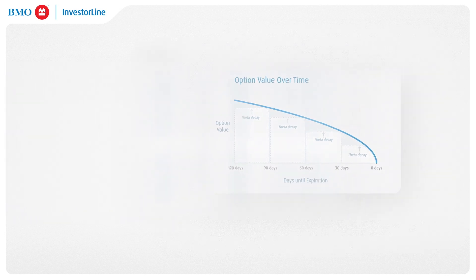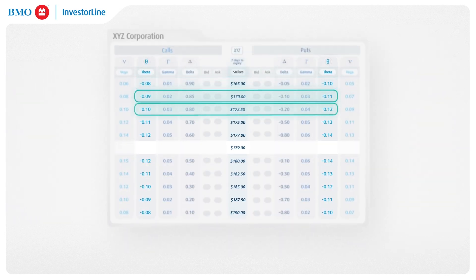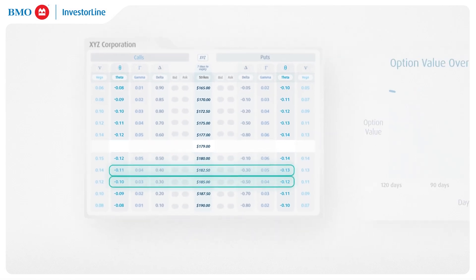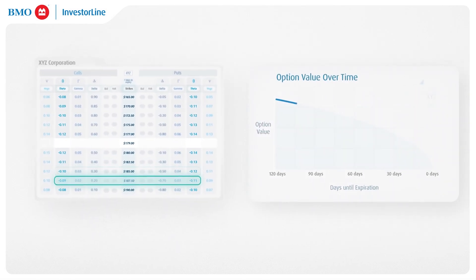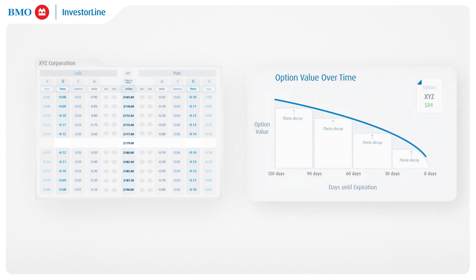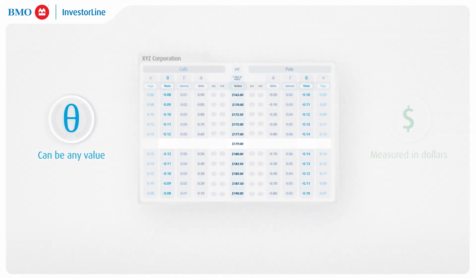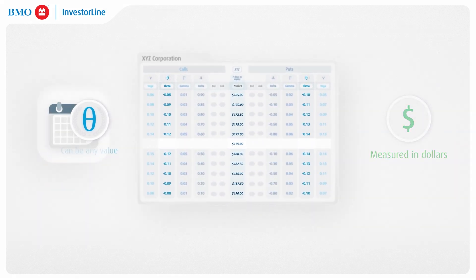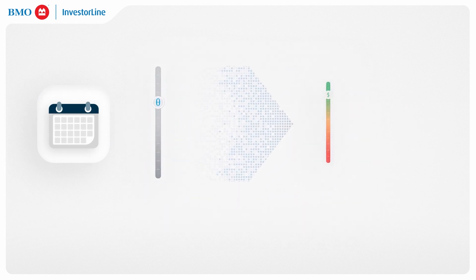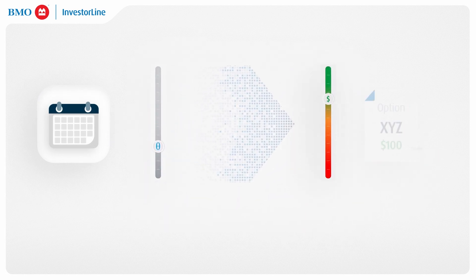Here on the options chain, you'll notice Theta values associated with each option. These values indicate the amount by which the option's price is expected to decrease for every day that passes. Therefore, Theta can be any value and is measured in dollars. These values can change throughout the day and represent the reduction of option premium to be expected the following trading day.